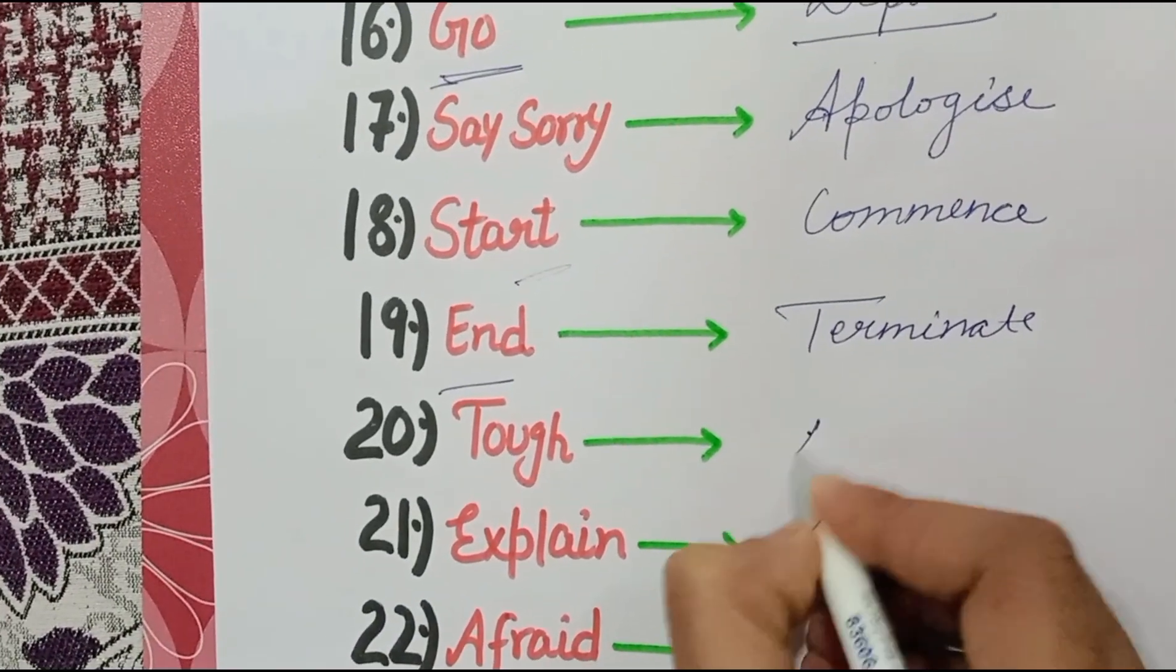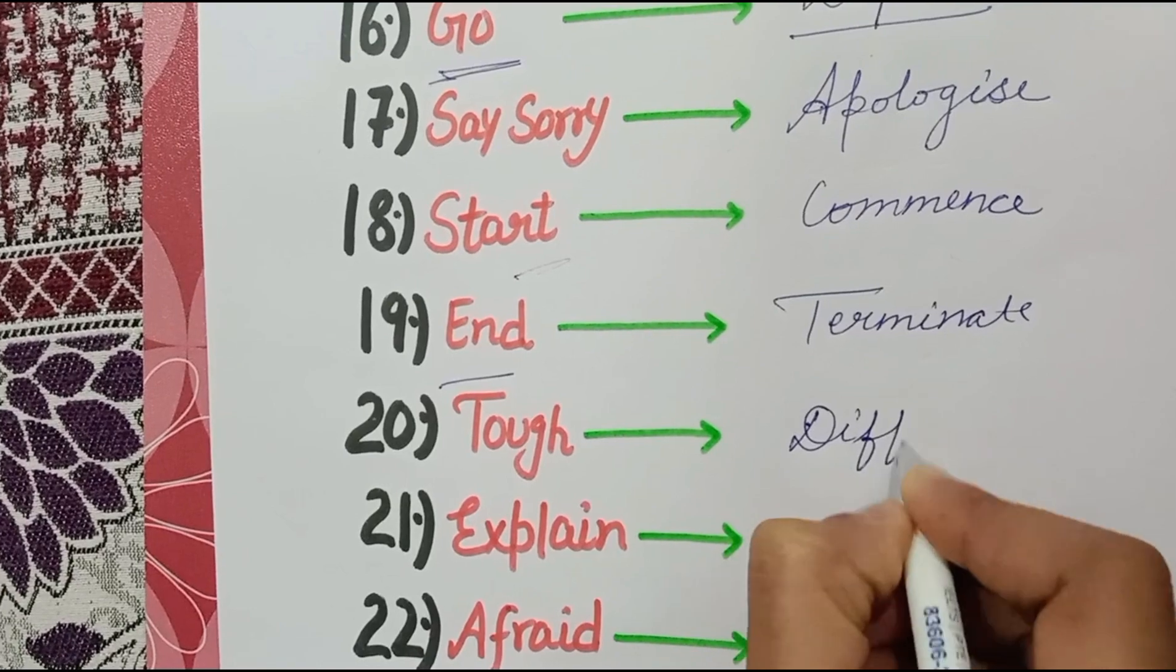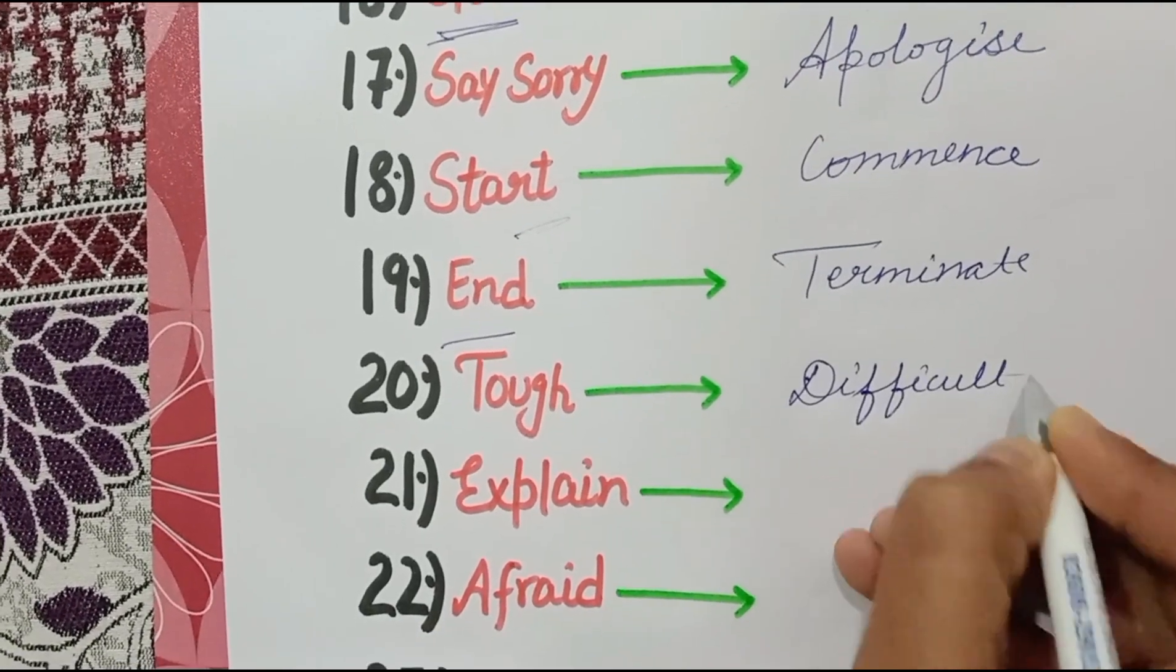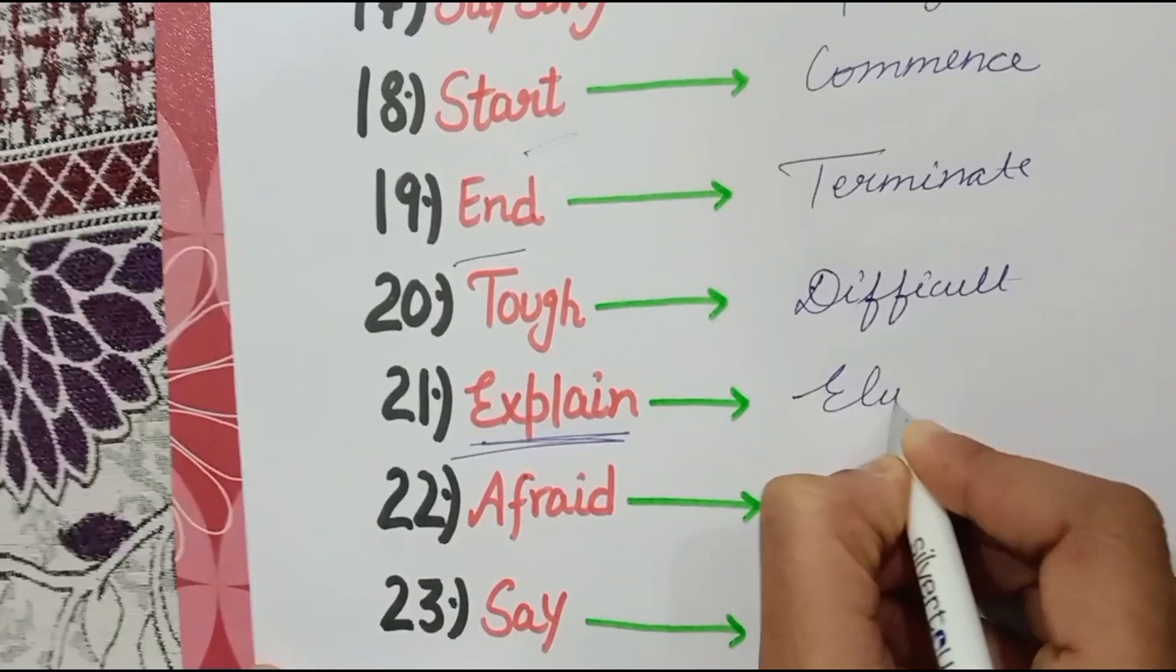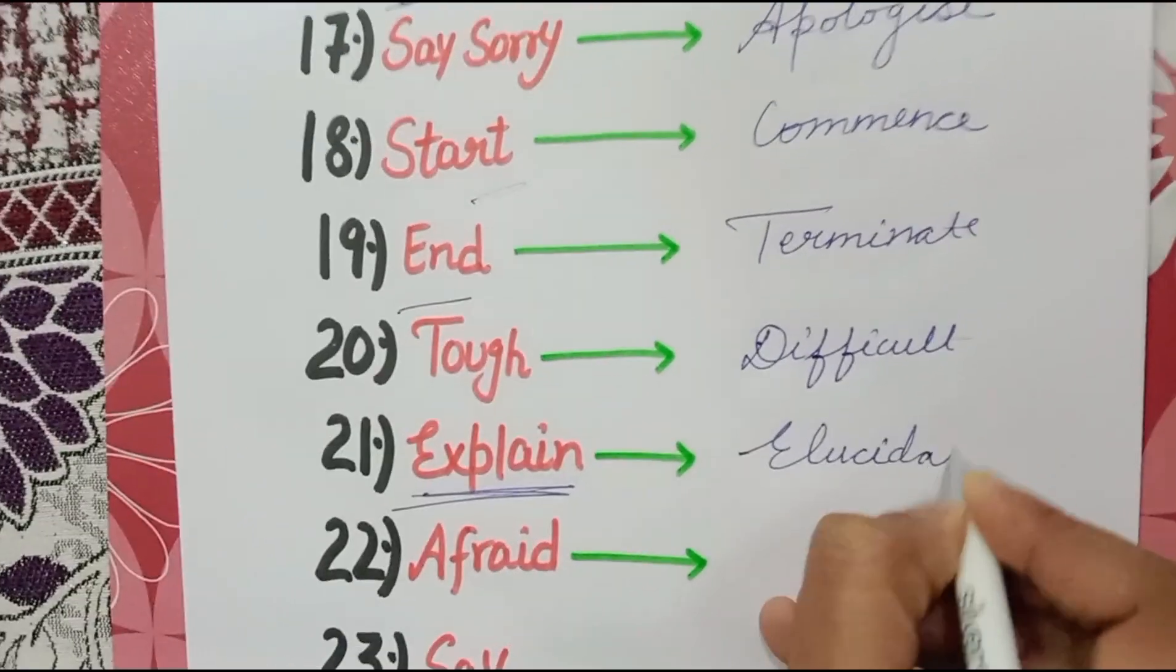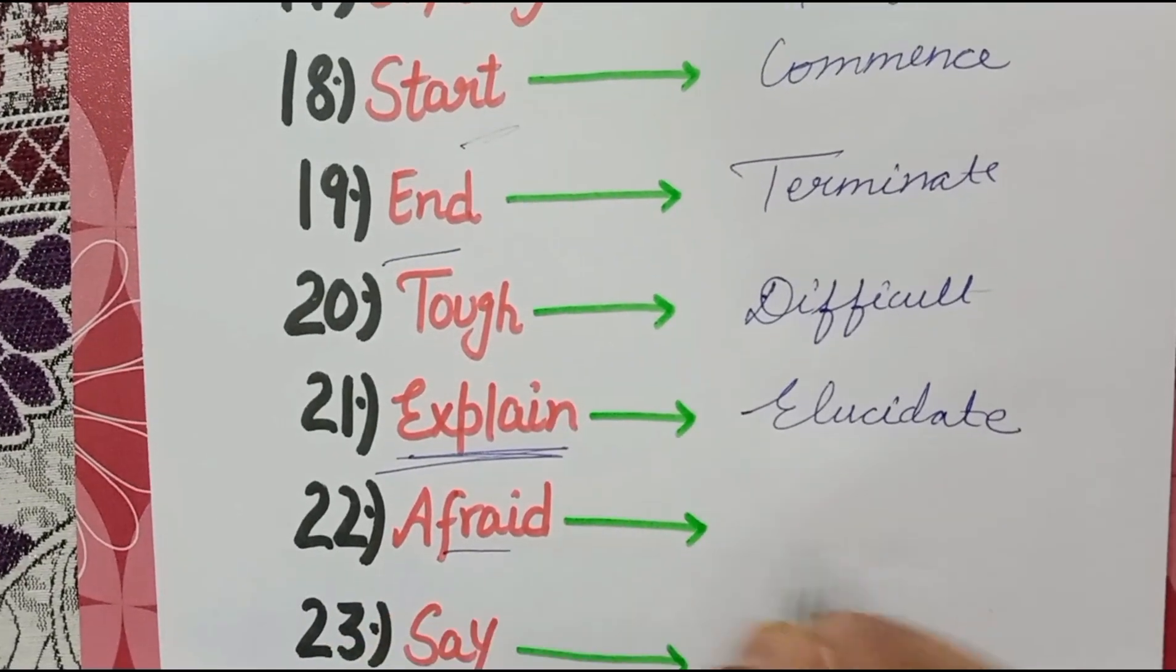'Tough' - 'difficult'. 'Explain' - you can say 'elucidate'. 'Afraid'...